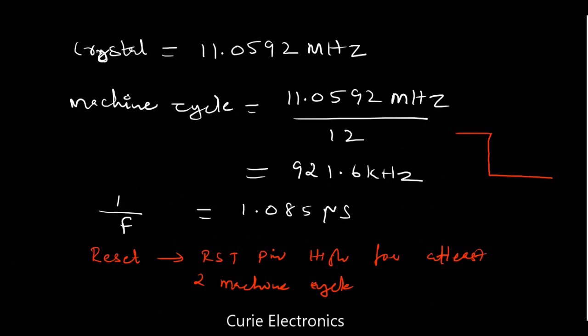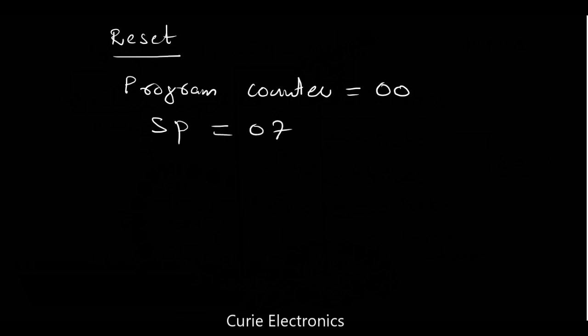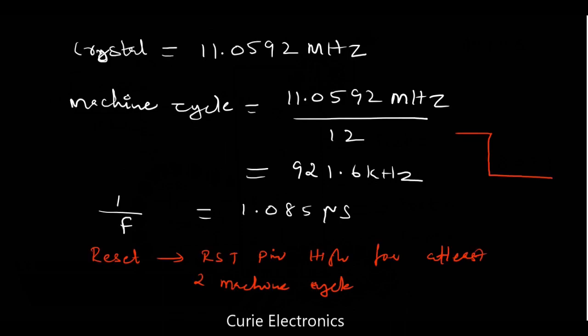Now when reset happens, what occurs? When reset occurs, all the registers will set to initial value. That means our program counter will be holding zero zero value, so the execution starts from zero zero memory location. It will fetch from zero zero memory location. Also, what you should know is that the stack pointer will be holding a value of zero seven.